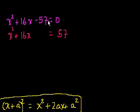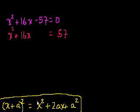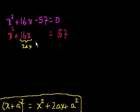All I did is add 57 to both sides of this equation. Now, what could I add here so that the left-hand side becomes a square of some expression like x plus a? Well, following this pattern, we have x squared plus 2ax, so you could view 16x as 2ax. And then we need to add an a squared to it. And we know from basic algebra that anything you do to one side of an equation you have to do to the other.